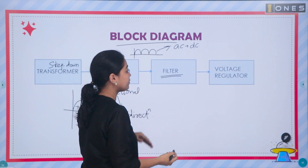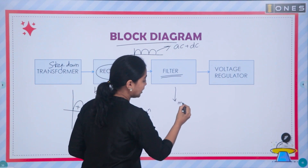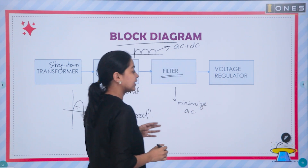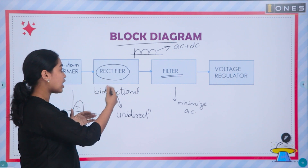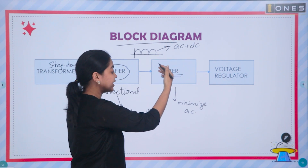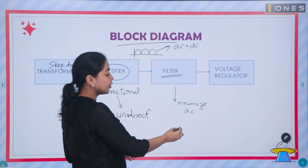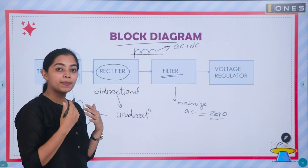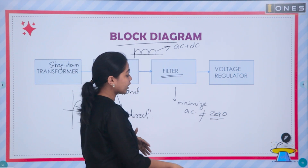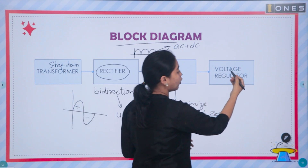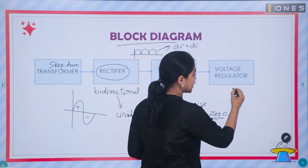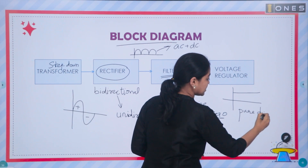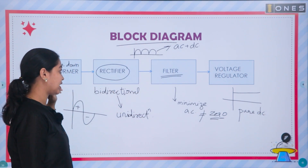They need a filter circuit. The filter minimizes AC content in the output. In the output of the filter, there will be AC plus DC content — the AC contents are minimized, but it can never be zero. Now, we use a voltage regulator. In the voltage regulator, the final output is pure DC. So, we focus on rectifiers in this session.